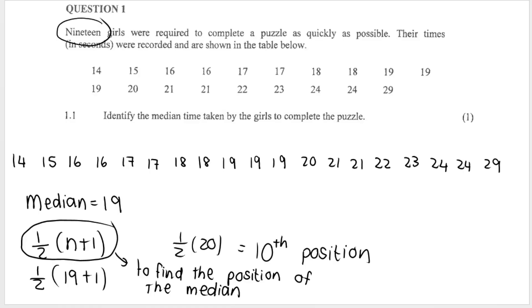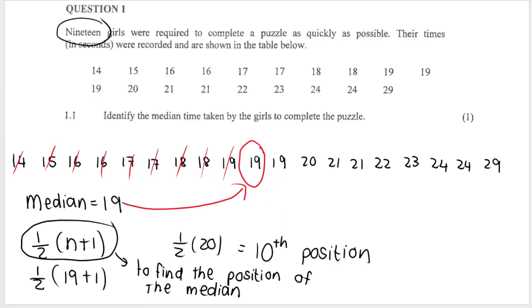If you start with the data set as it looked in the beginning, this is the first position, second, third, fourth, fifth, sixth, seventh, eighth, ninth, tenth position. So again, our median comes to this value over here, which is 19.